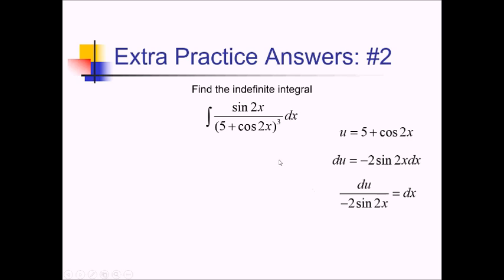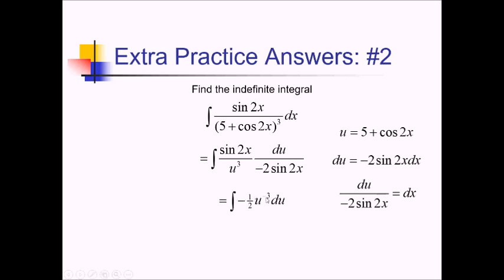Substituting things back in, sine of 2x is still there, and down below we now have u to the third power, with dx replaced by du over negative 2 sine of 2x. The sine of 2x terms cancel, giving us negative 1 half u to the negative third power. Writing u as a negative exponent makes the reverse power rule easier. Bumping the exponent up to negative 2 and dividing gives positive 1 fourth u to the negative 2 power plus c. Substituting back, we have 1 fourth times the quantity 5 plus cosine of 2x raised to the negative 2 power plus c.